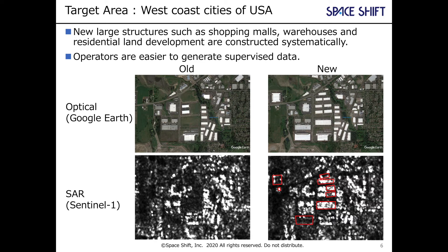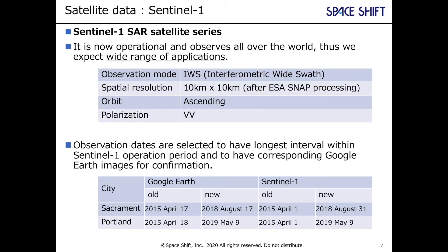The image here shows optical and SAR images and supervised data polygons. For SAR satellite data, we chose the Sentinel-1 series because it is operational and observes all over the world, so we expect a wide range of applications, and of course it is free of charge. We focus on change detection, so observation dates are selected to have the longest interval within the Sentinel-1 operation period and to have corresponding Google Earth images for confirmation. The table below shows the dates.